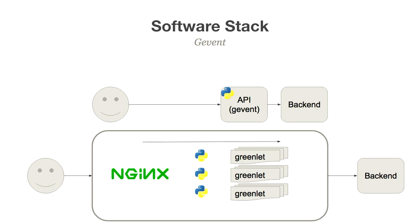At Pinterest, our API server is GEvent Python-based, and we have a bunch of different back-ends in various languages — Python, Java, Go, and others. We have Nginx as a reverse proxy, and a few different separate Python processes running GEvent in the form of greenlets. This is a critical piece of our system, and most of the latency coming from the front end suggests something's going on here.